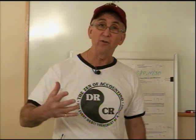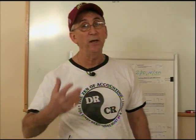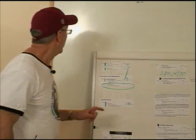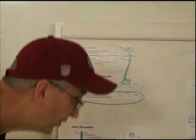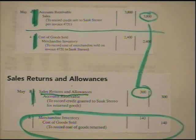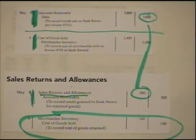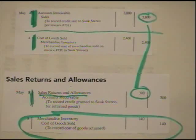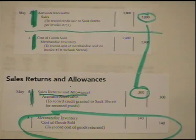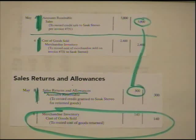Let's take a look at our entry. You'll have this in your text, on your PowerPoint, and now on the video. When we record the entry, there are two things we will always need to have. We will need to know how much that actual sale was for, and the problem will have to tell us how much the goods cost that we're selling, so we can make the second journal entry — which is to remove the goods from the inventory and put it into cost of goods sold.